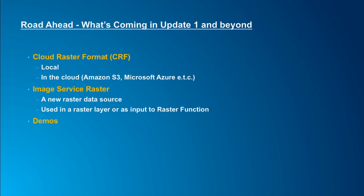Just to mention, the two demos we showed today — the NDVI and the creation of the mosaic dataset — are actually the first time we're showing them in public. I'm going to give you a quick preview of what's coming in terms of new raster features in Update 1, the 100.1 release. In the 100 release, we provided capability to work with local raster data: raster object, raster layer, raster renderer, and raster functions. In Update 1, we're expanding that by introducing new raster data sources — the image service and the cloud raster format.